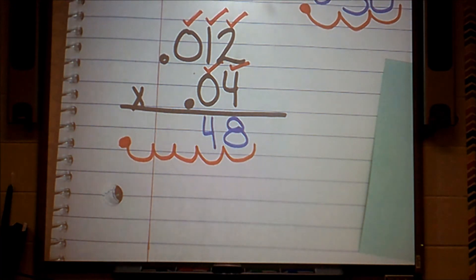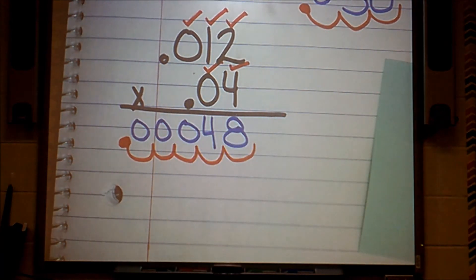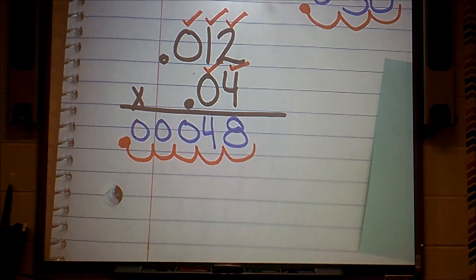So all of those bumps that don't have any digits in them, I'm going to fill with a zero. The proper way to read this final product is 0.00048 or 48 hundred thousandths.